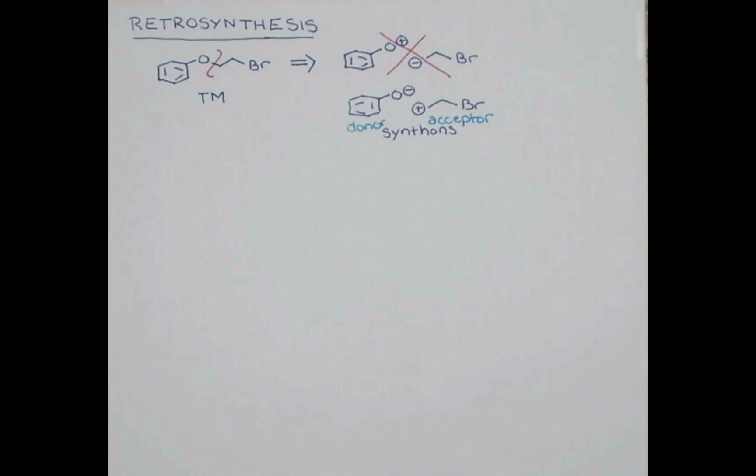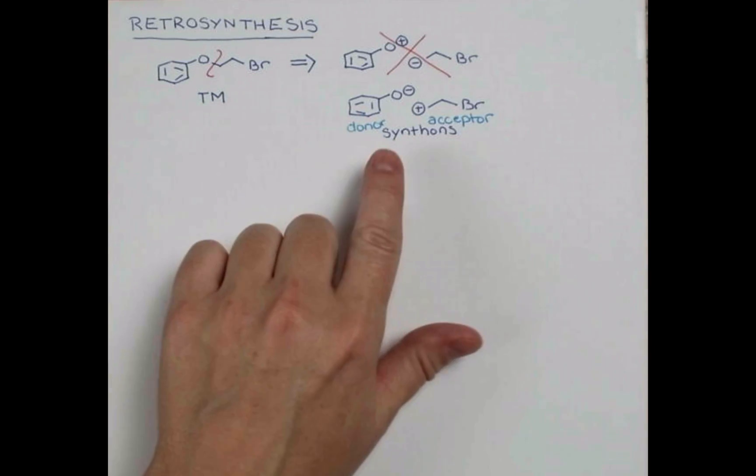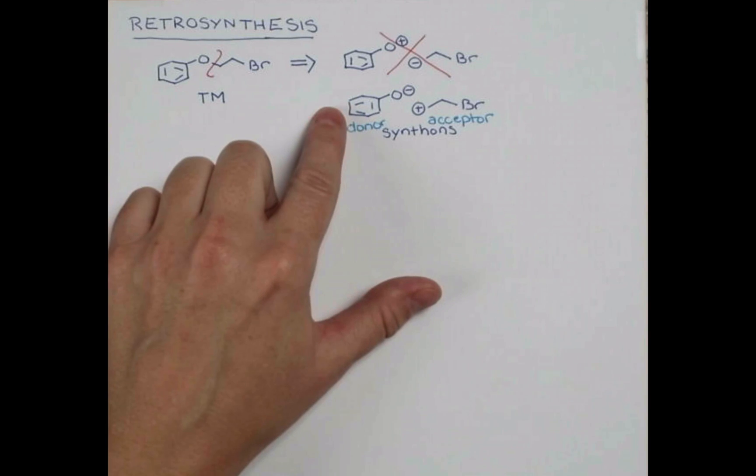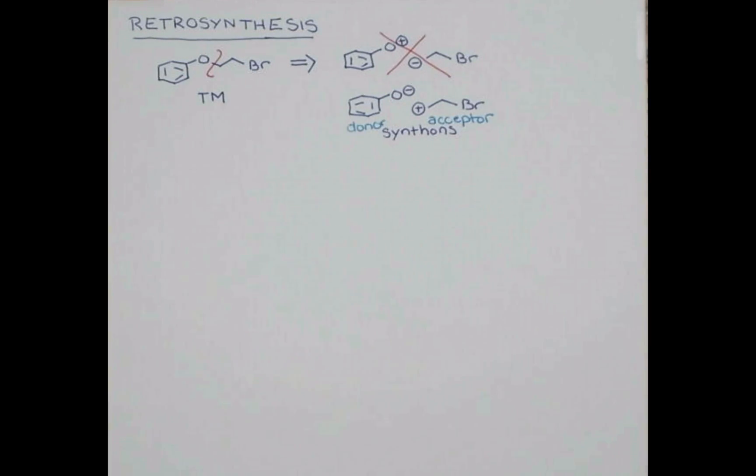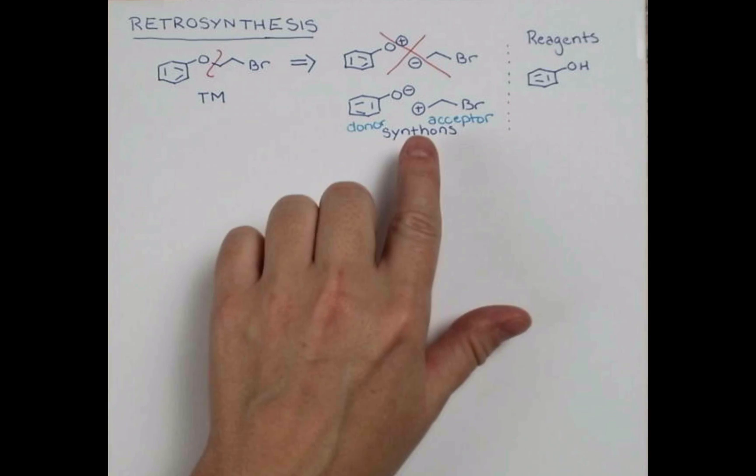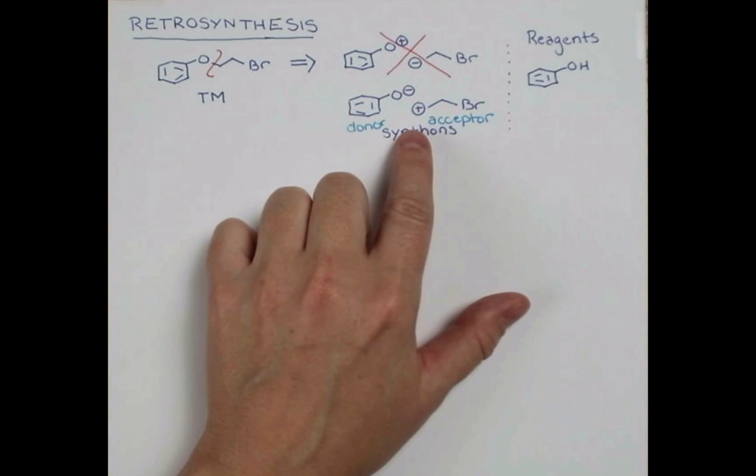Now I can't go to Sigma Aldrich and find synthons. I just can't buy these things. I need to buy reagents. So what could this translate to? This one is pretty easy. It has an O minus, but we know that phenols are pretty readily available, maybe from our electrophilic aromatic substitution chapters. So here's phenol.